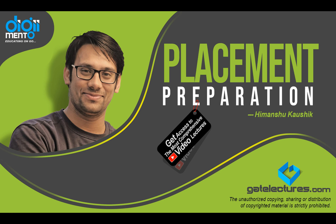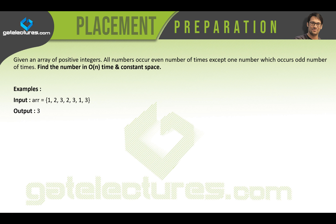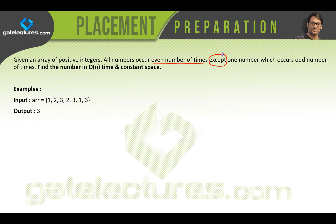Hello and welcome to the next problem. In the previous videos we discussed about the majority element. Now in this video we are taking the next problem which is about the odd occurrence of a number. The problem says: given an array of positive integers, all numbers occur an even number of times except one number which occurs an odd number of times, and you have to find that number in O(n) time and constant space.